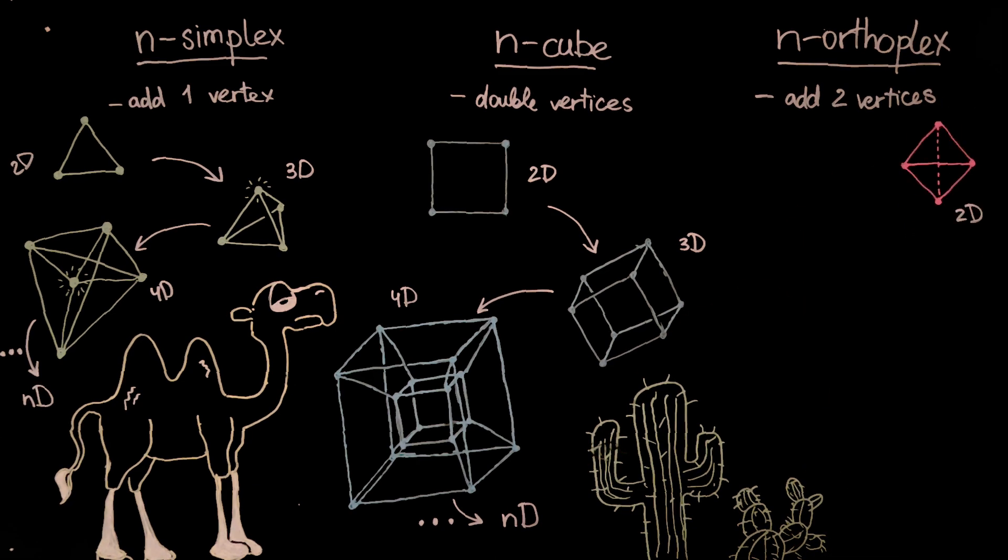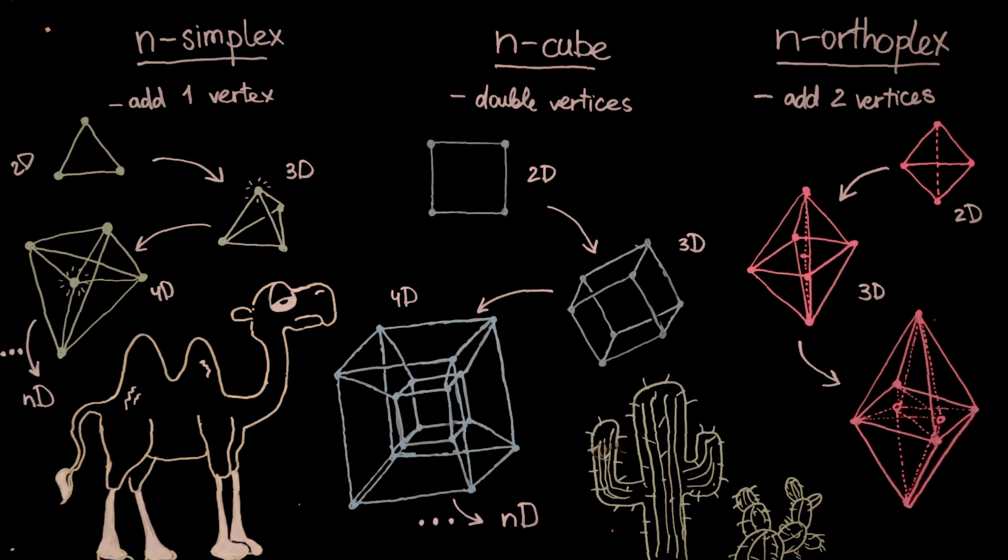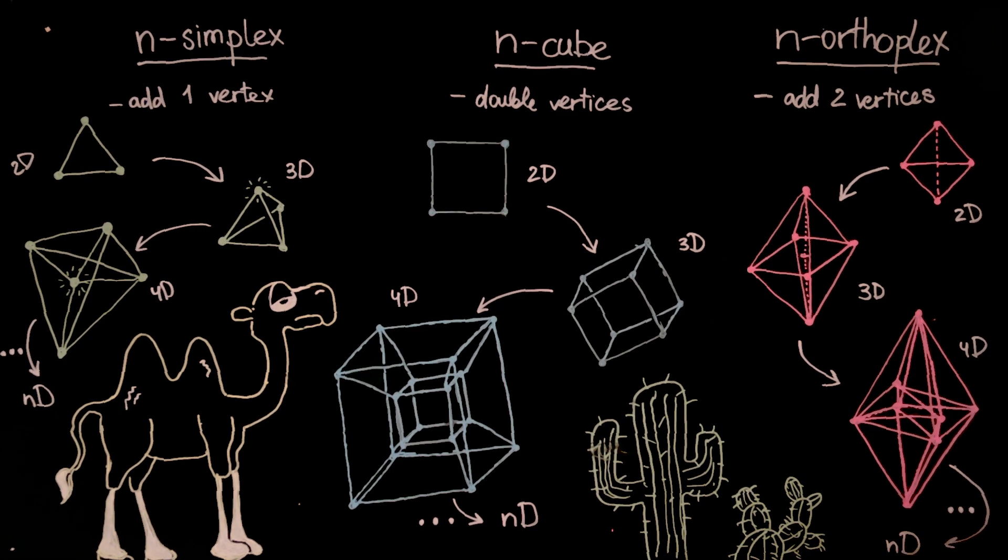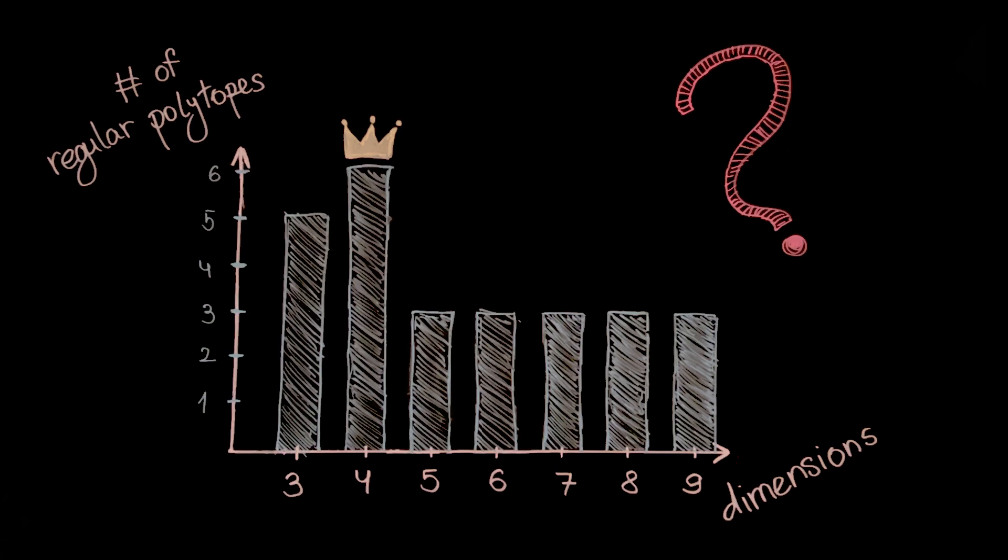Starting with a segment, we can build a square, an octahedron, a 16-cell, and so on. Please tell me if you know exactly what makes 4 dimensions stand out.